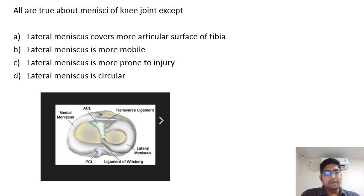The meniscus contains three parts: the anterior horn, the posterior horn, and the middle broader part, which is called the body.